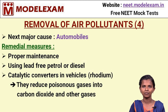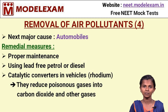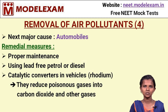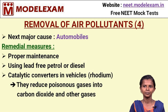Removal of Air Pollutants, Part 4. Here we see another major cause of air pollution — automobiles — and what measures we can take to reduce vehicle-related air pollution. The first measure is proper maintenance of vehicles. The next is using lead-free petrol or diesel. Using catalytic converters in vehicles can also reduce air pollution. Catalytic converters include materials like rhodium, and they reduce poisonous gases by converting them into carbon dioxide and other gases before releasing them, thus reducing air pollution.